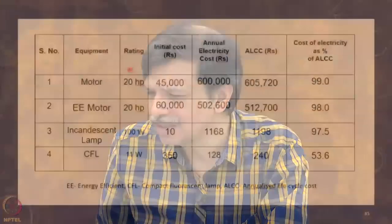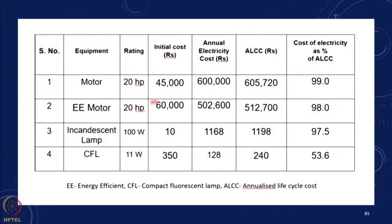For instance, if you look at a 20 horsepower motor, the initial cost is just 45,000 rupees, while an energy efficient motor may be slightly costlier at say 60,000. However, the annual cost of electricity to run that motor continuously is about 6 lakhs, and in the case of the energy efficient motor it works out to 5 lakhs, so we get much more benefit.